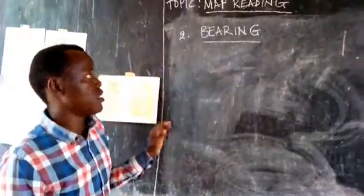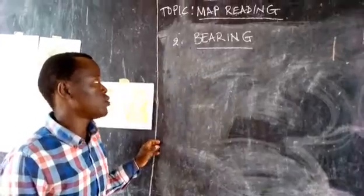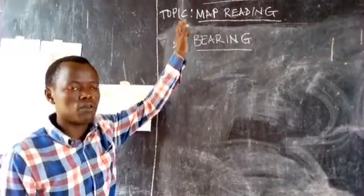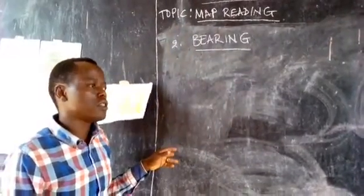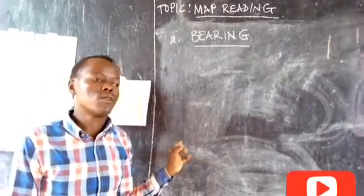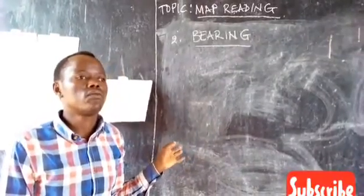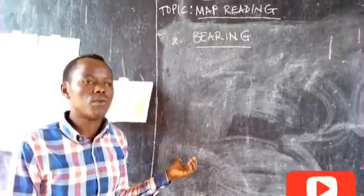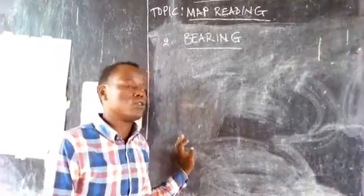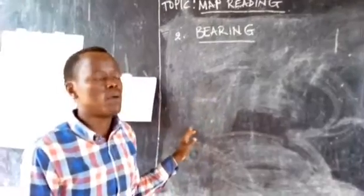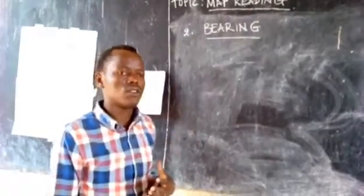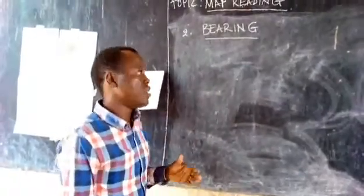Welcome to this episode 2 about the topic of map reading. In the previous lesson we talked about how to locate a particular point when we talk about the map by using the grid reference system. And now we are going to see the bearing.